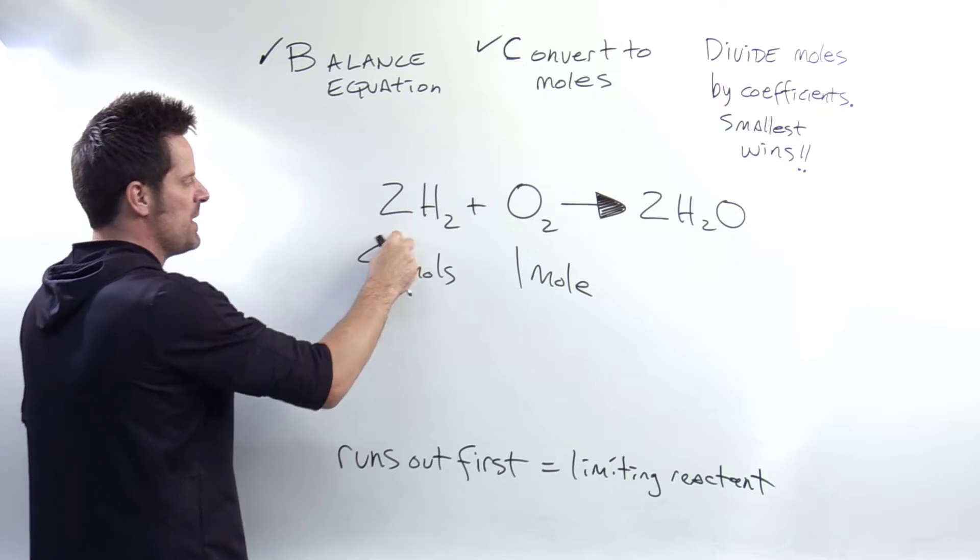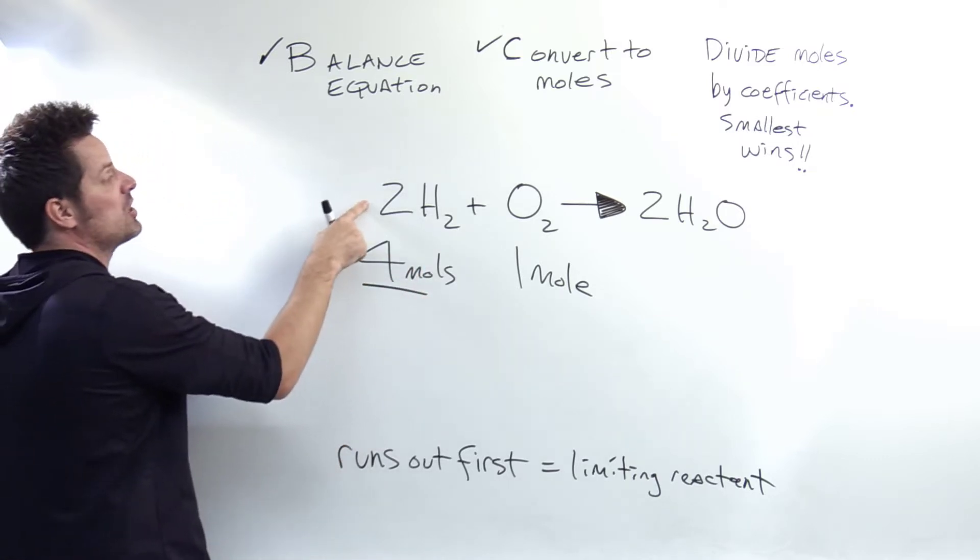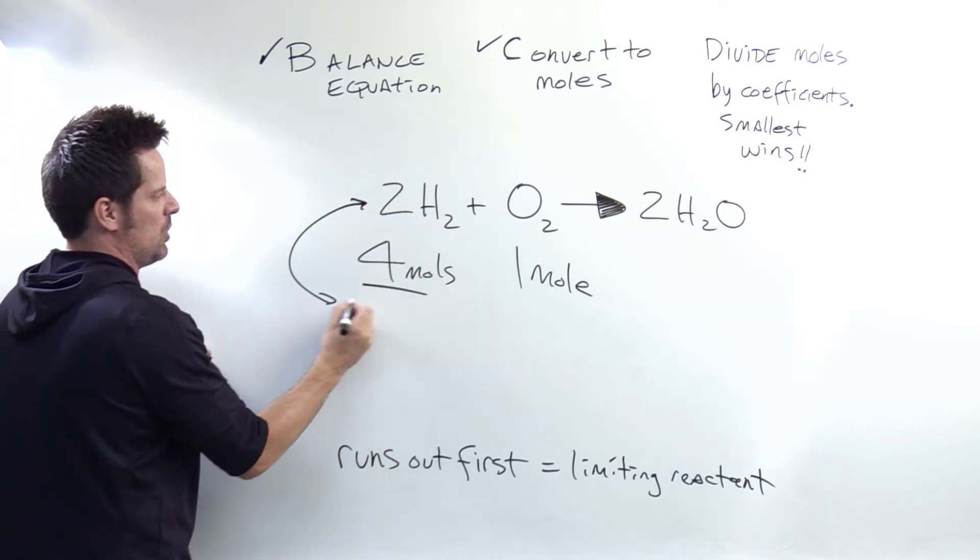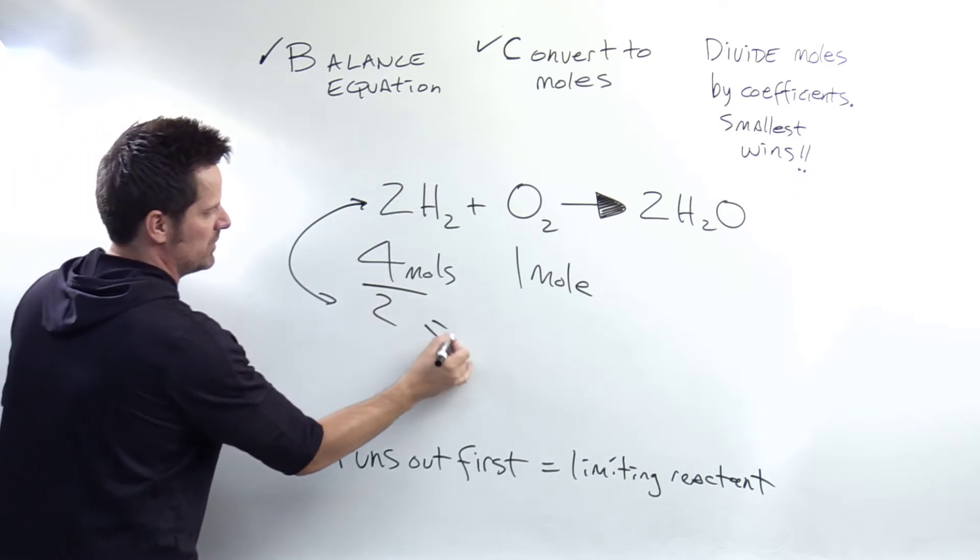So here I have four moles of H2. What I'm going to do is divide that by the coefficient of H2 which is this 2. So 4 divided by 2 is equal to 2.